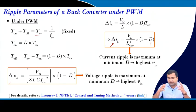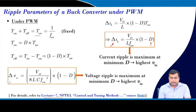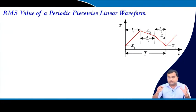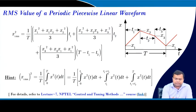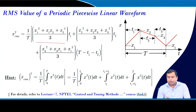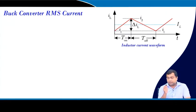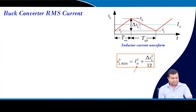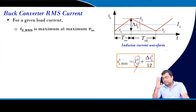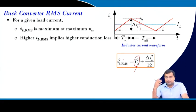Both worst-case conditions occur at the highest input voltage, where the current and voltage ripple will be maximum. For the RMS value of a piecewise linear waveform, derived by integration, the RMS inductor current equals the square root of the load current squared plus ΔiL²/12, where ΔiL is the ripple current. For a given load current, the RMS is worst when the ripple is maximum — that is, at maximum input voltage — and higher RMS current means more conduction loss.